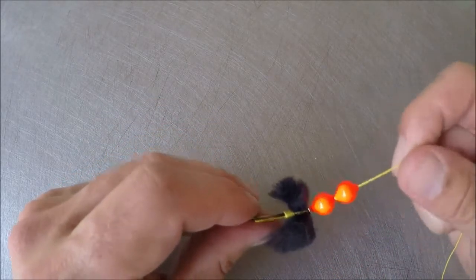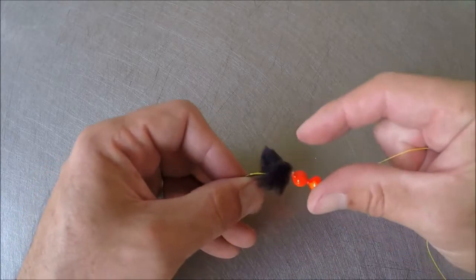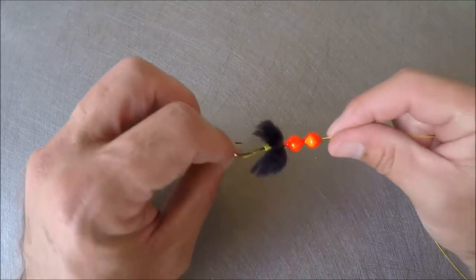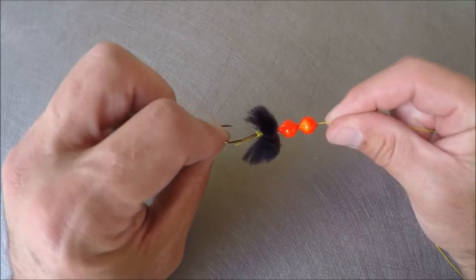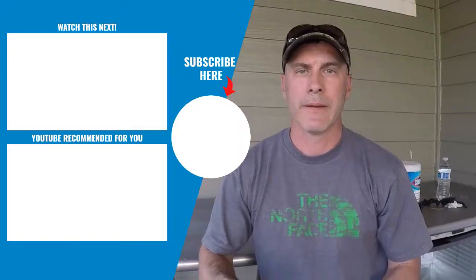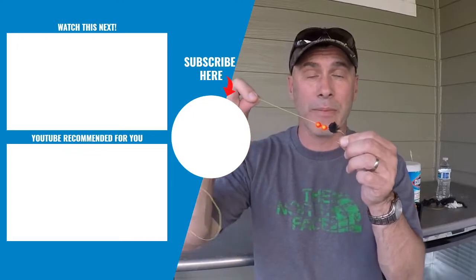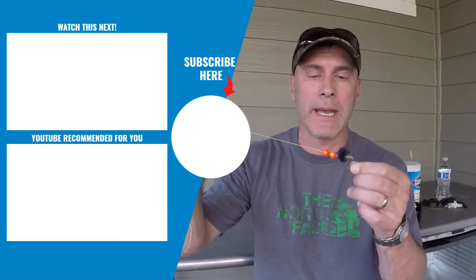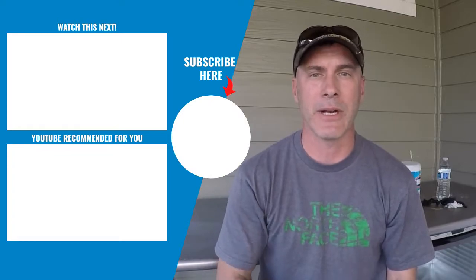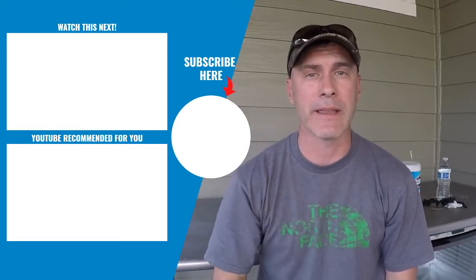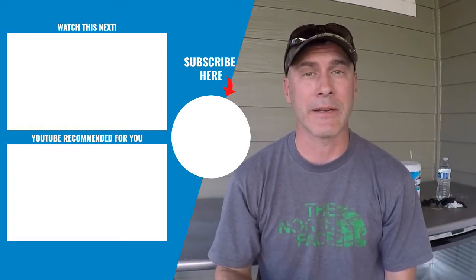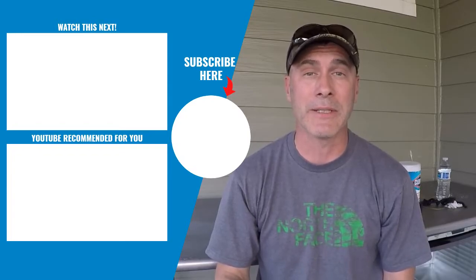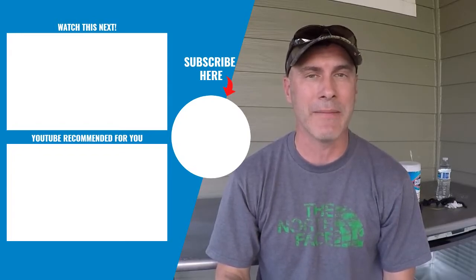And there it is, the complete setup. I'm telling you right now, I've caught multiple fish on this and I've never had one come unwrapped. All right guys, the egg loop, it's a simple and effective way to tie a leader to a hook. Give it a try. Hey, if you like this video give it a thumbs up and be sure to check out the other content on this channel. I appreciate you taking the time to watch. Until next time, take care.